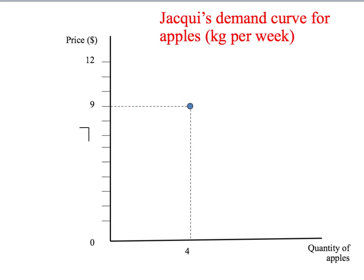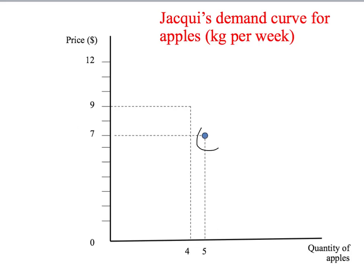Suppose we ask Jackie another question: if apples are $7 per kilogram, how many would you like to buy? Remember, by our helpful assumption, when the price goes down we would expect Jackie to buy the same amount or more apples. So if the price comes down to $7, we'd expect Jackie to say she'd like at least 4. Let's suppose she says 5. At the price of $7 a kilo, she says, 'I'm happy to buy 5 kilograms of apples. That would be my plan — if the price was $7 per kilogram, I would like to buy 5 kilograms of apples.' So here's our third point on Jackie's demand curve.